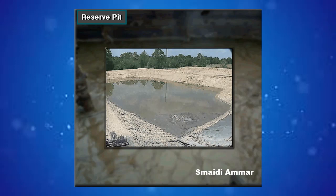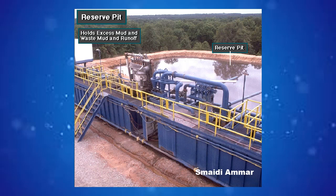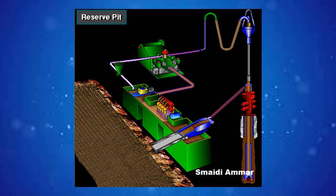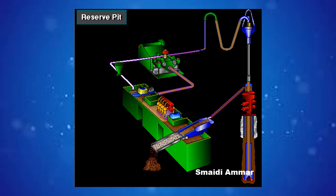On some land rigs, the rig owner digs a large pit next to the rig called the reserve pit. The crew puts waste mud and runoff from the rig site in the reserve pit. In an emergency, they can also use it to hold more mud than the tanks can hold. Often, the rig operator lines the reserve pit, and if the rig is on a migratory bird flyway, the operator covers it with netting to keep waterfowl from landing in it. Land rigs drilling in environmentally sensitive areas will not have a reserve pit; instead, wastes and runoff are hauled to an approved waste disposal area.